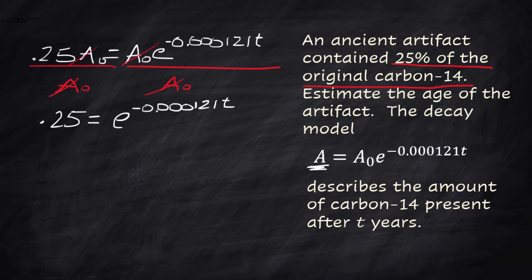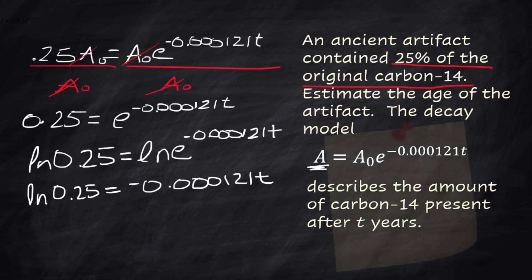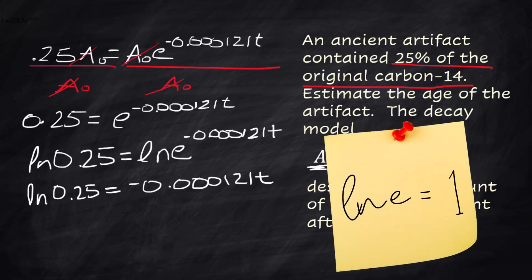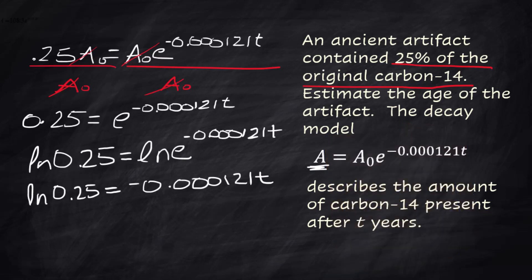Natural log on both sides. Now that exponent will come down. The natural log of e is 1. I'm going to leave that off because of my space here. Now to solve for t we're going to divide by negative 0.000121. That's going to cancel. Yay! That was pretty satisfying.